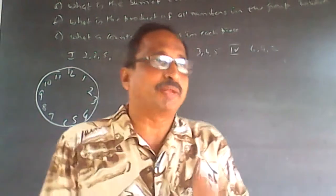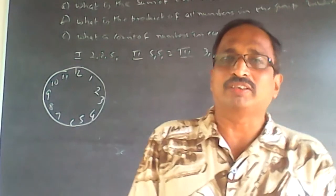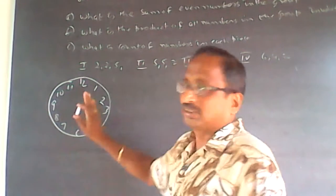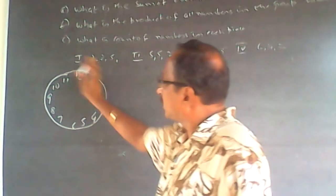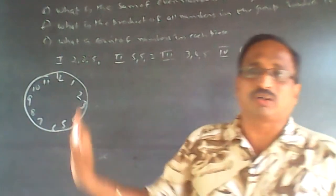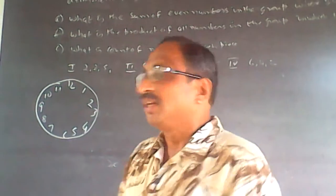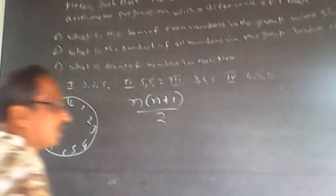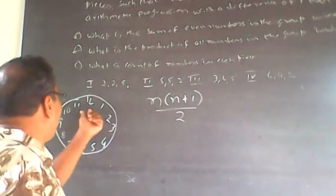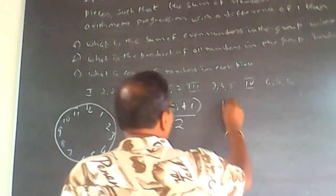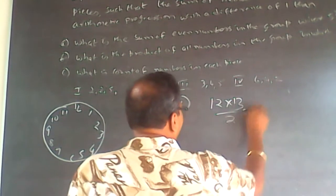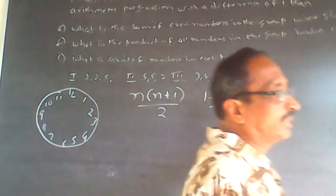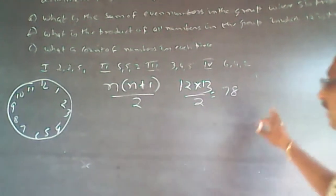Now let us think of the numbers in the arithmetic progression. When this clock is cut, the sum of the AP can only equal the sum of all 12 numbers. The formula for sum of n numbers is n(n+1)/2. So the sum of 12 numbers is 12×13/2 = 78. The sum of the arithmetic progression can only be 78.